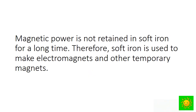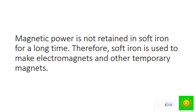Magnetic power does not remain in soft iron for a long time, so soft iron is used to make electromagnets and other temporary magnets. Magnets in which magnetic power is retained for a long time are known as permanent magnets. Steel or ferrite is used to make permanent magnets, and ferrite is used to make more powerful permanent magnets.